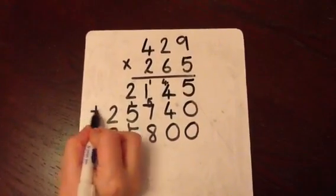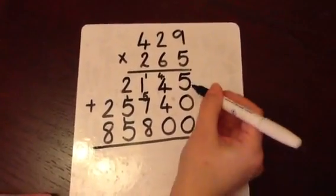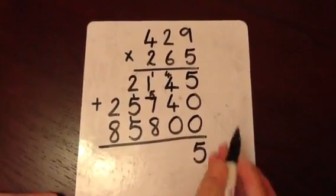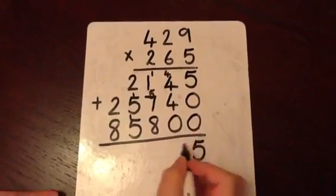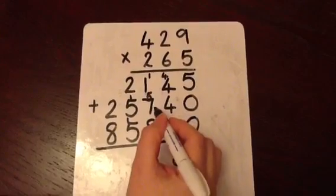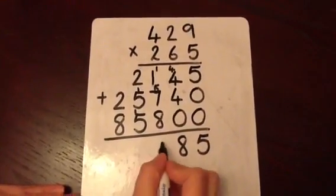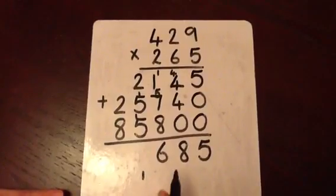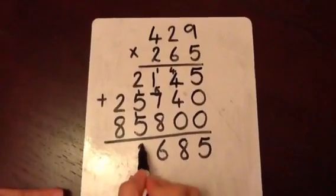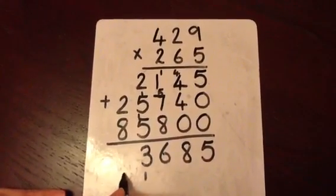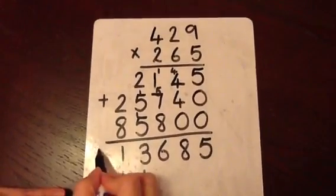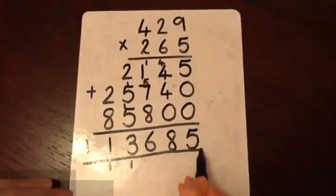And now we must add all of these numbers together, starting always with the units column. 5 add 0 add 0 is 5. 4 add 4 add 0 is 8. 1 add 7 add 8 is 16 — we put the 6 and carry the 1. 2 add 5 add 5 add 5 is 12, and the 1 we carried across makes 13 — we write the 3 and carry the 1. 2 add 8 is 10, and the 1 below makes 11. Which gives us a total of 113,685.